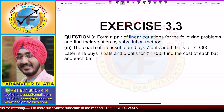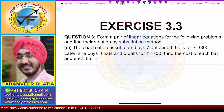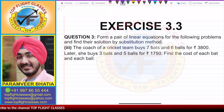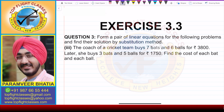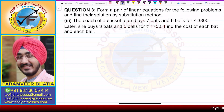The third part is: the coach of a cricket team buys seven bats and six balls for rupees 3800. Later she buys three bats and five balls for rupees 1750. Find the cost of each bat and each ball.